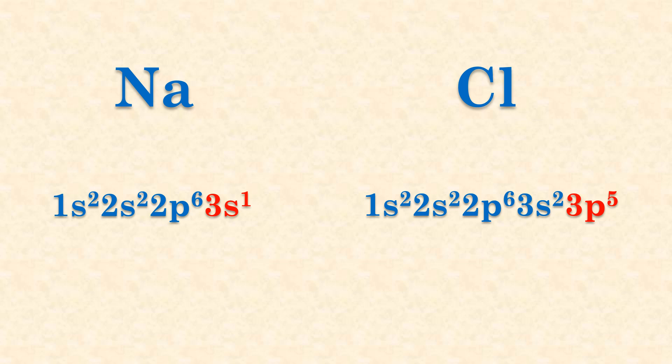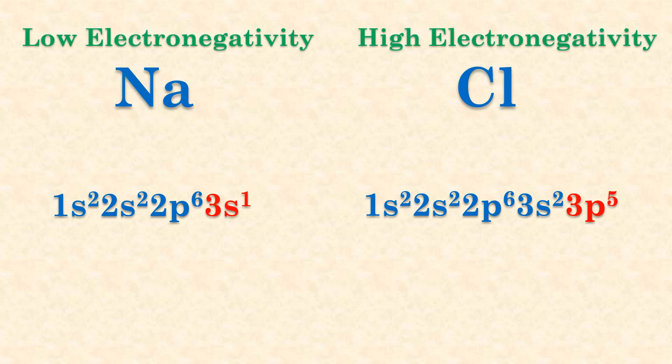I'll use the simple example of sodium and chlorine with their respective electron configurations shown here. The valence electrons are shown in red. The electronegativity difference between metals and nonmetals is very large, with chlorine being the more electronegative atom.